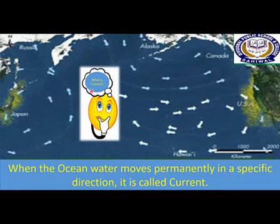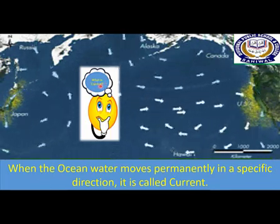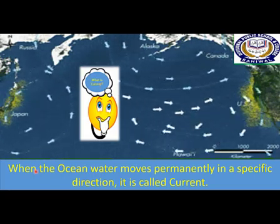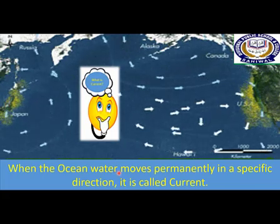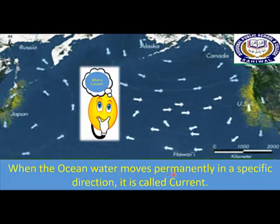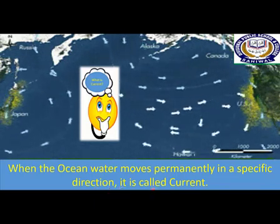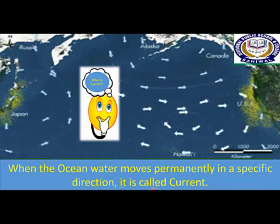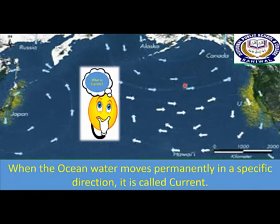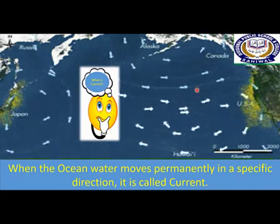Now the question is: what is a current? When the ocean water moves permanently in a specific direction, it is called a current. When the water moves in a particular direction permanently, then we can say this is an ocean current.